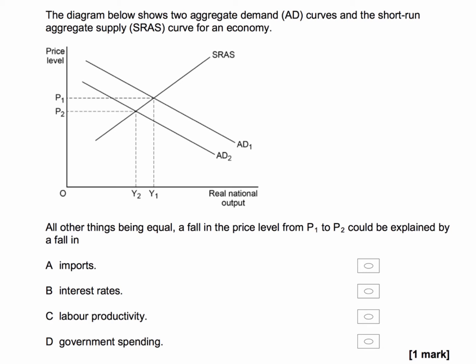Well the demand curve has shifted inwards of course, the aggregate demand curve has moved from AD1 to AD2. So we're either looking for a fall in an injection of demand or a rise in a leakage of demand in the circular flow. Let's go through the answers.